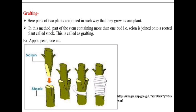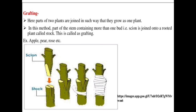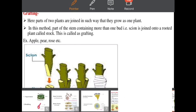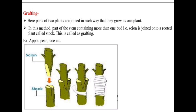In the grafting method, two plants are involved. One part involves the roots of the plant, which is called the stock — this is the rooted plant. The other part is the stem portion that is joined onto the rooted stock plant; this joining portion is called the scion, which is joined onto the stock.